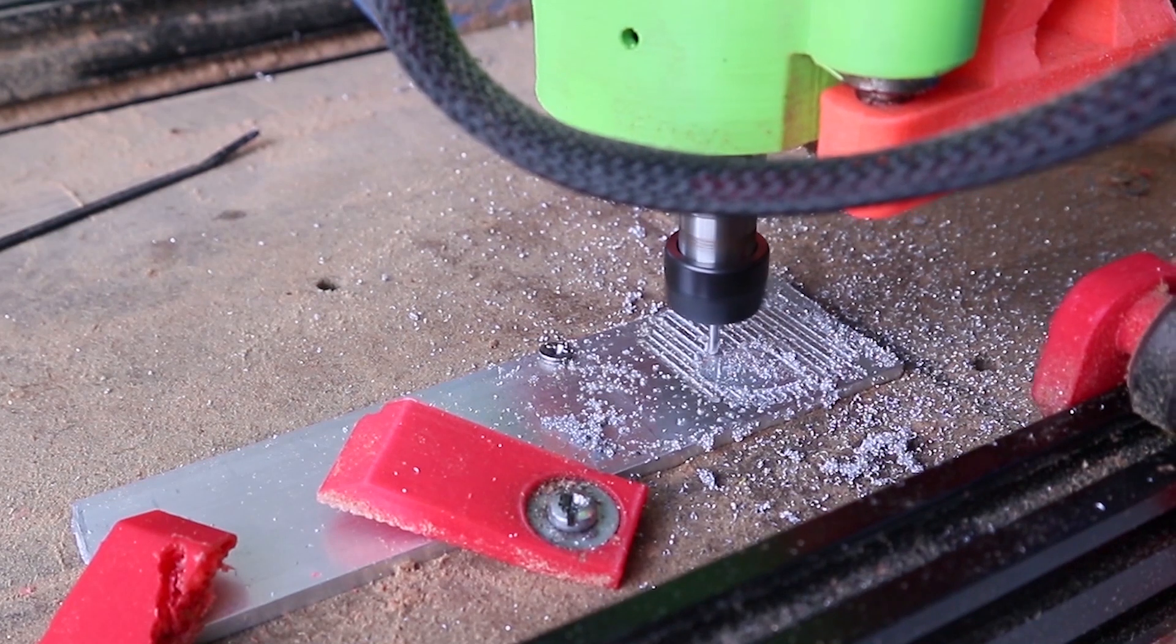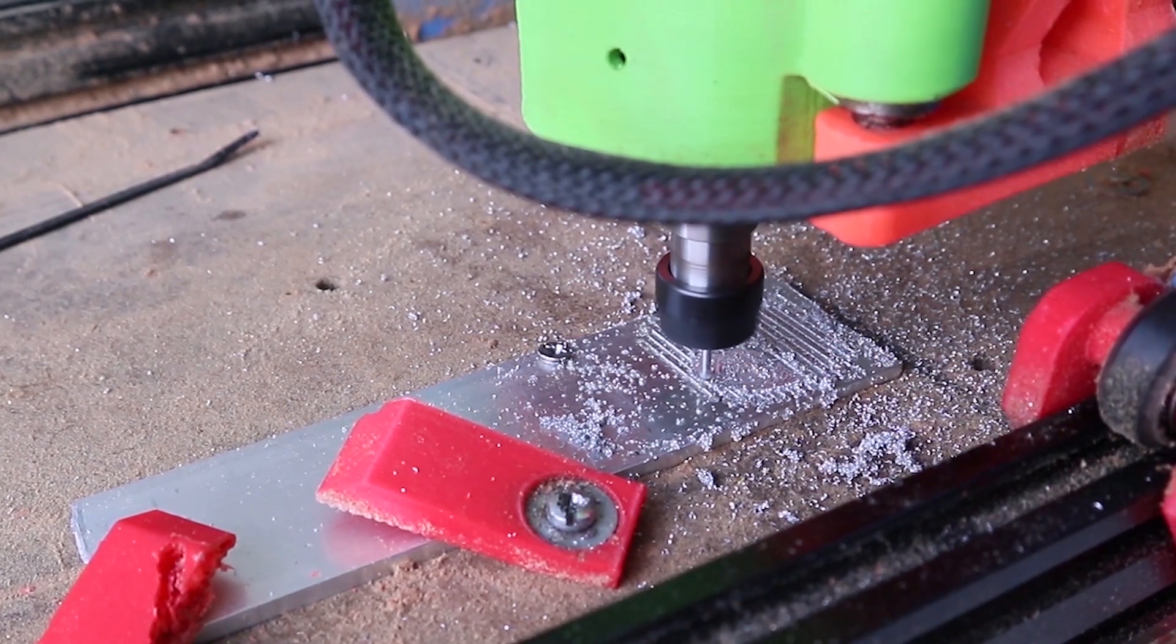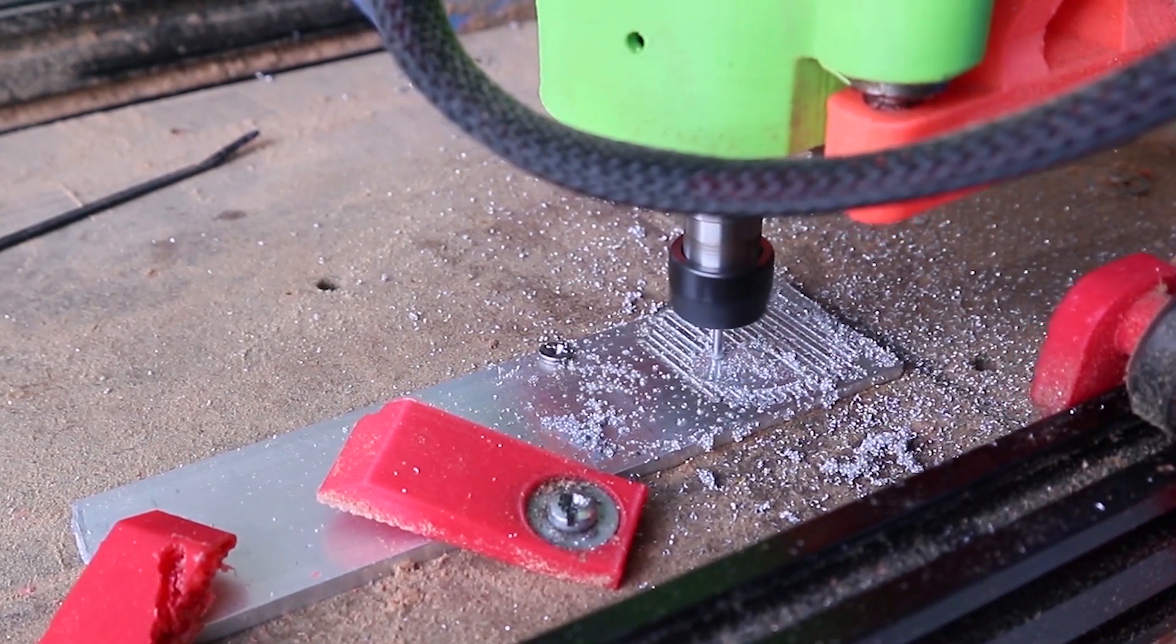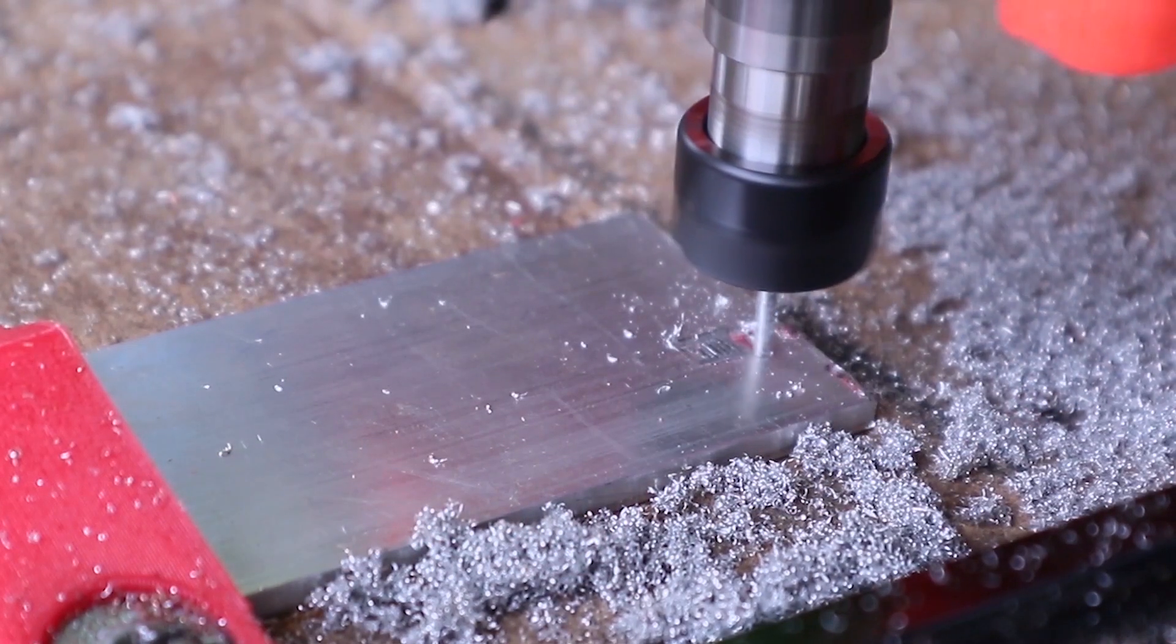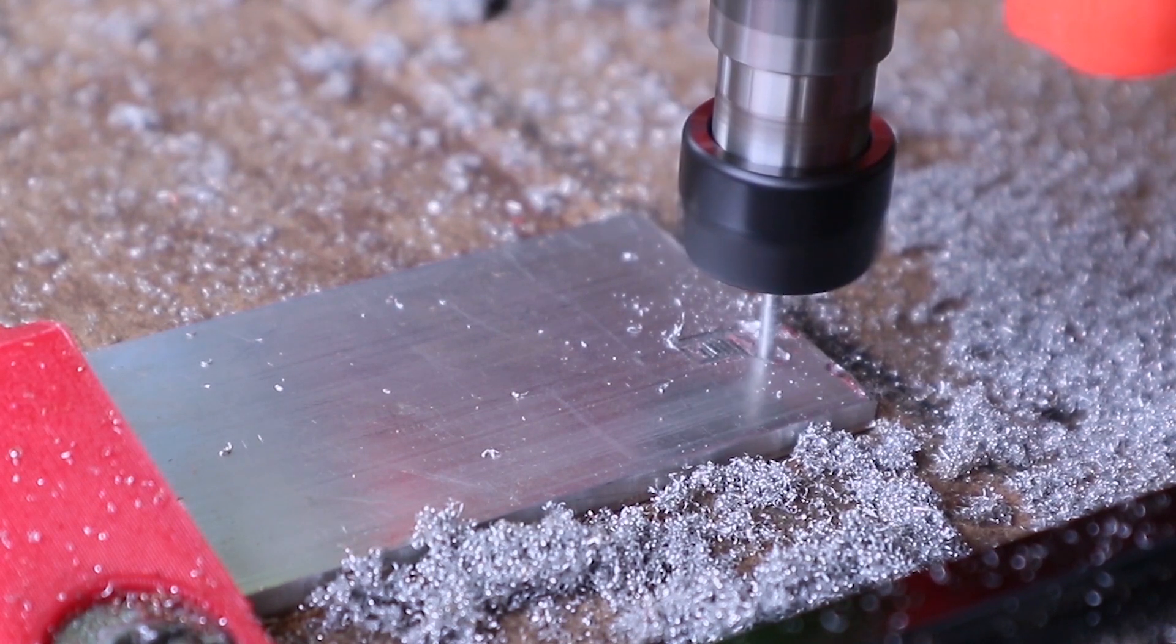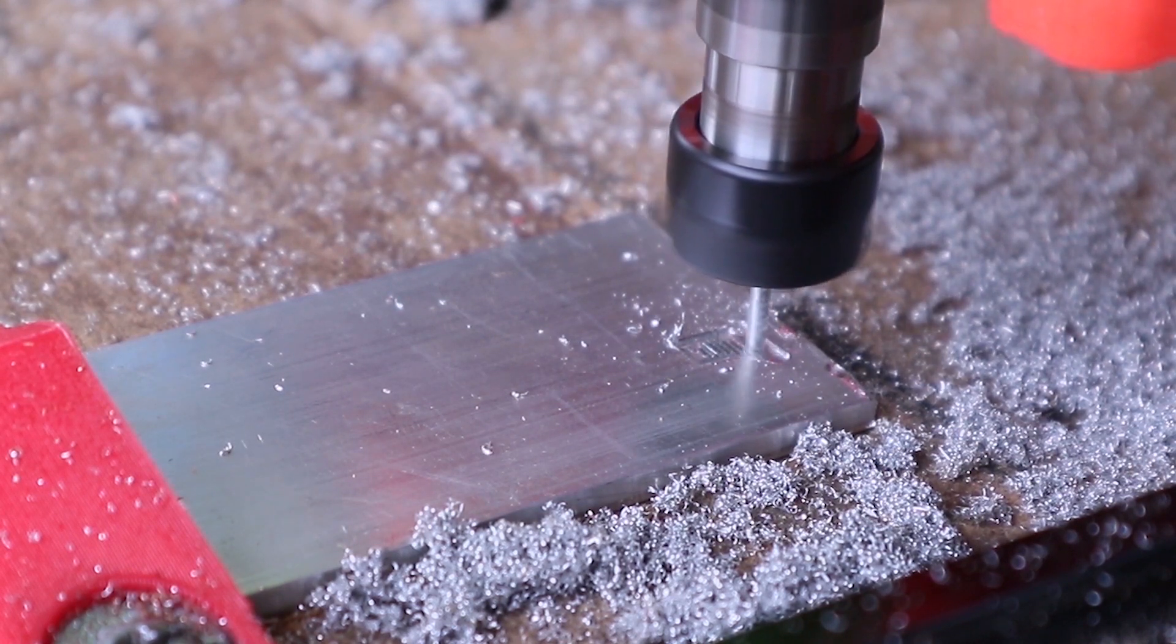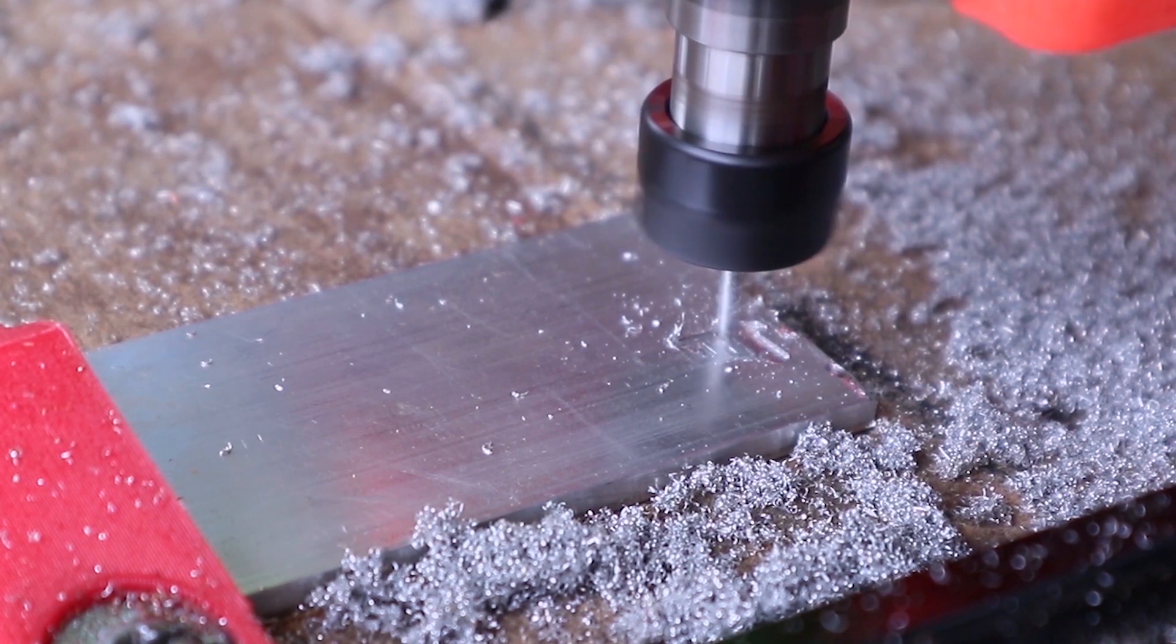The first test was to cut aluminum with 0.2 depth of cut. It started very well, but it soon proved us wrong.